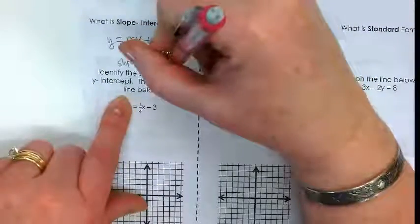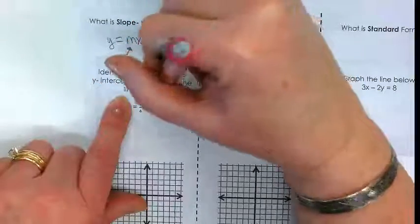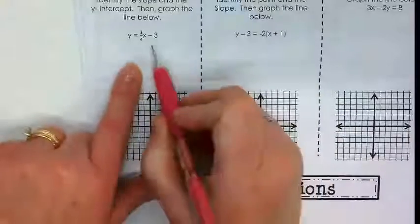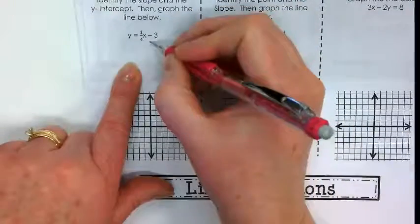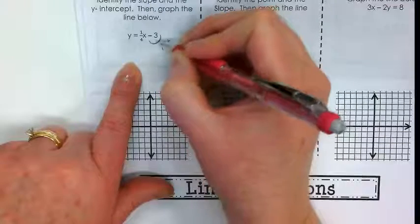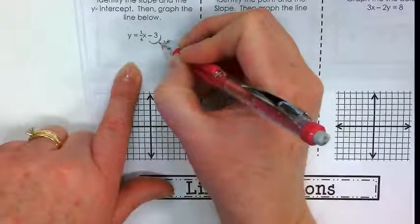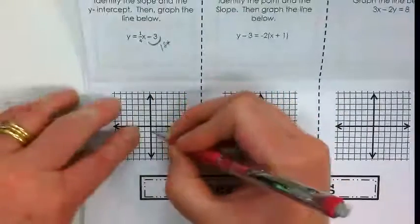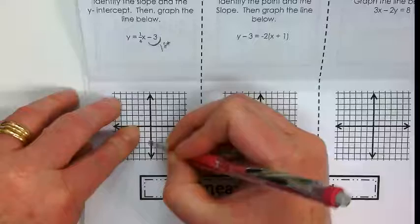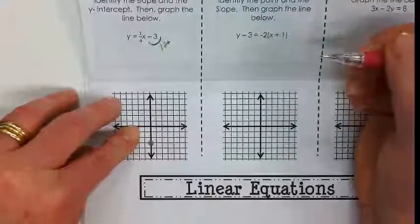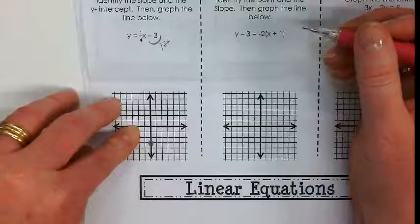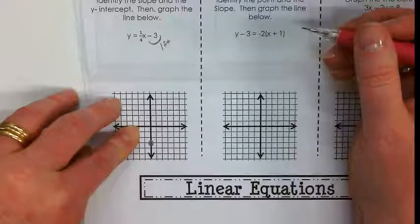If we can identify the slope and the y-intercept, then we can graph equations when they're in this form. The first thing you do when you graph in this form is you use the y-intercept first. And this is telling us it's negative 3. That means on our graph, on the y-axis, at negative 3, there's a point. Its coordinates would be 0, negative 3.